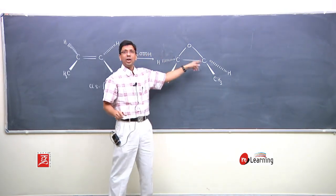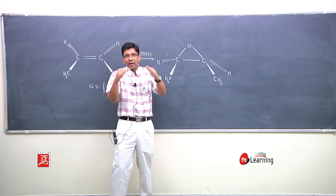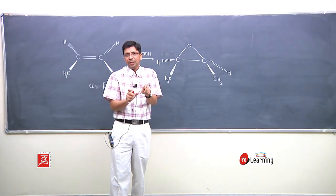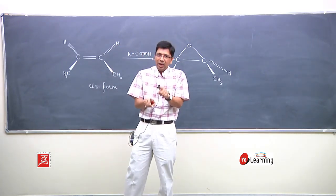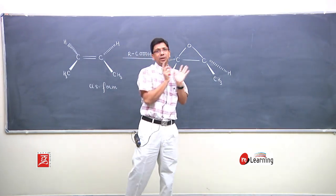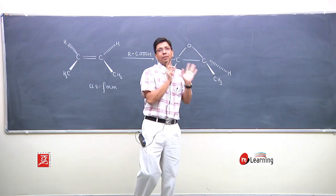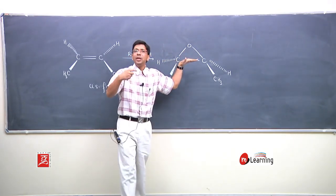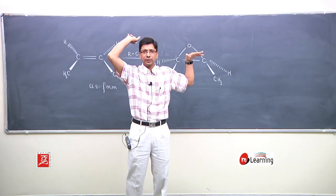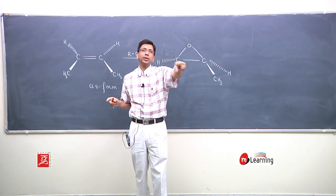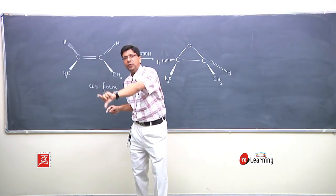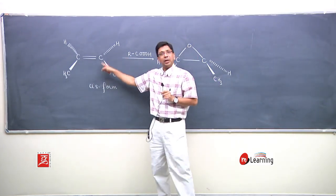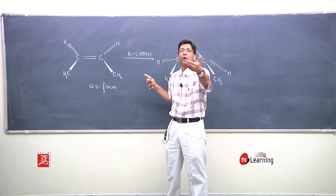Both methyl groups are coming toward you, both hydrogens are going away. Bond angle does change, so some structural adjustment is needed. Keep in mind that the epoxidation reaction is both stereospecific and stereoselective. The reactant specifically reacts and selectively gives one product — no other product is possible from cis-2-butene in this reaction.